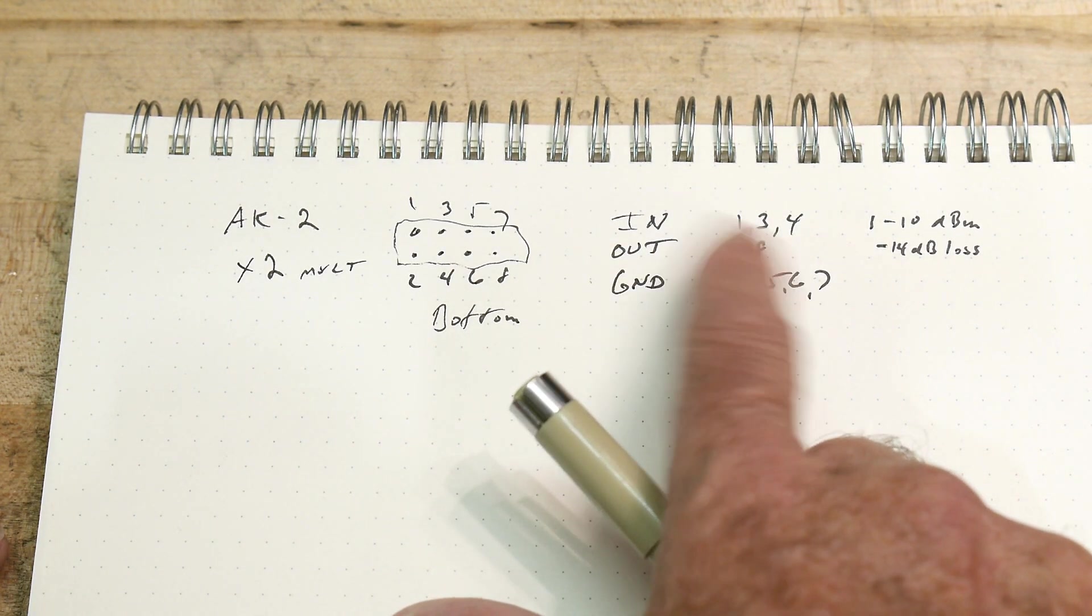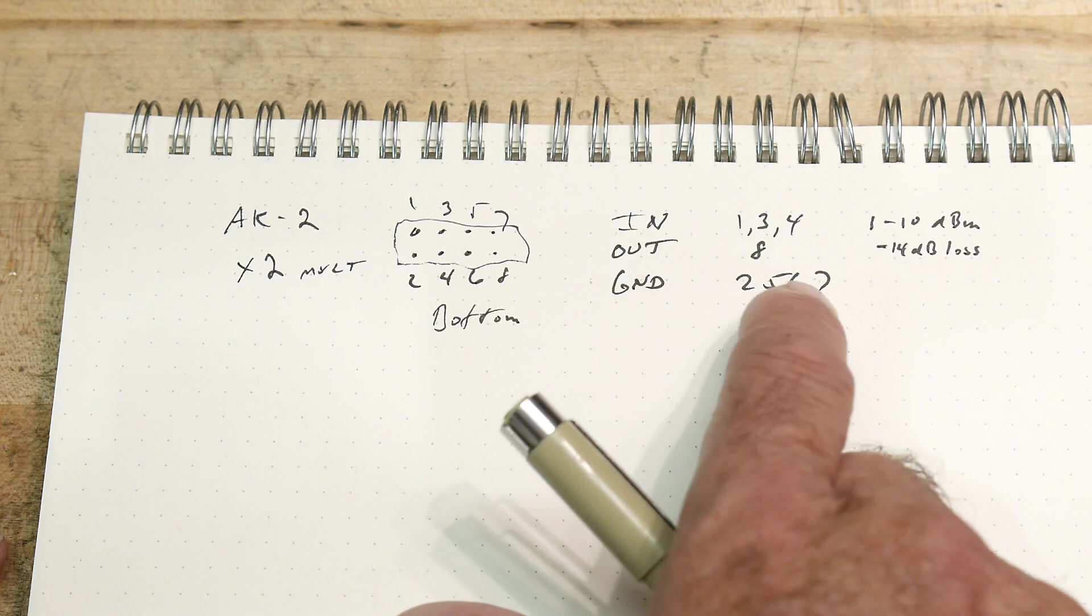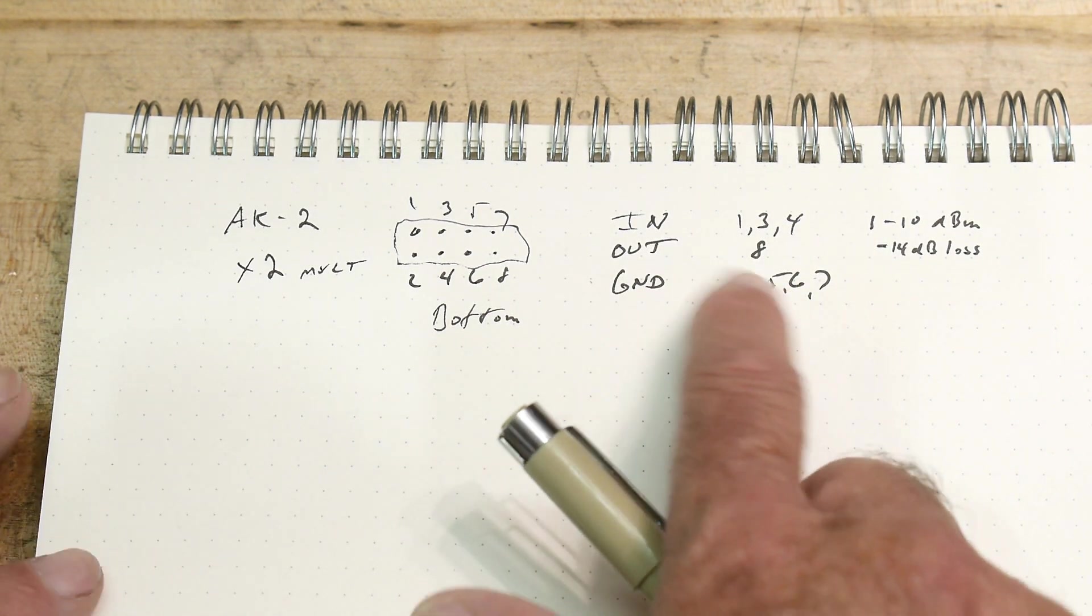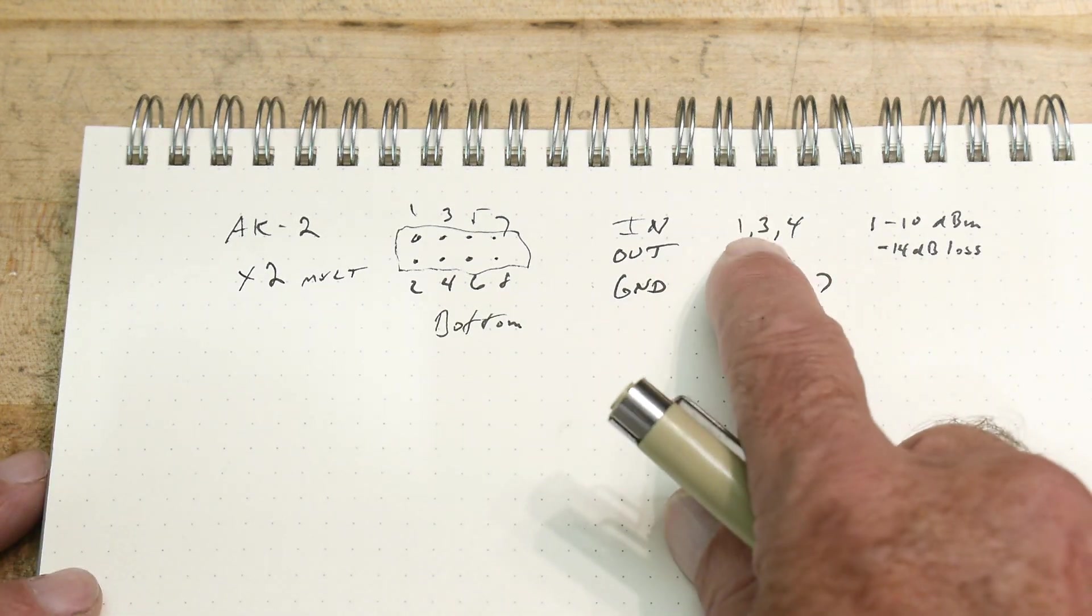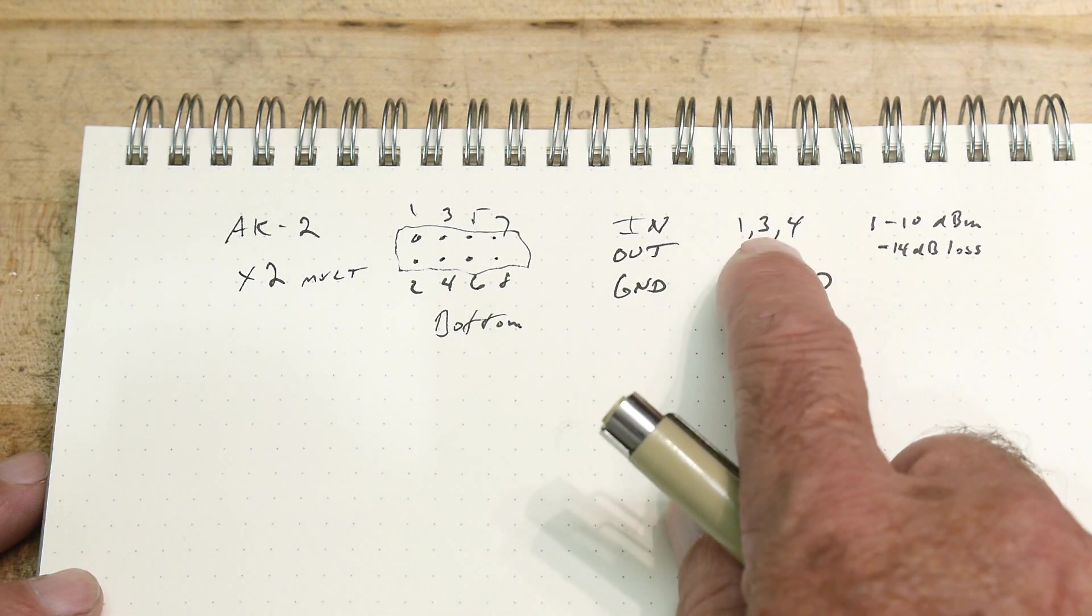So there's three pins for in, which is kind of weird, one pin for out, and then ground has multiple pins. That would be normal. But why do you have multiple pins for in? And the datasheet's very explicit, saying that these all have to be shorted together for it to work right.